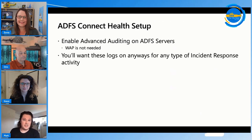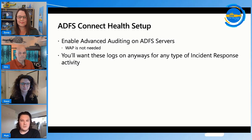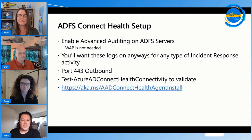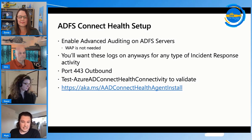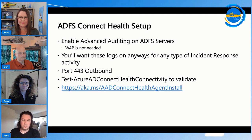Setting up ADFS Connect Health is straightforward. First, enable advanced auditing on your ADFS servers — you don't need to do anything on the WAP. If you don't have these logs enabled, do it anyway for incident response purposes. From a connectivity standpoint, you only need port 443 outbound. Go to aka.ms/ADConnectHealthAgentInstall to install the agent on your ADFS servers and start getting this data.